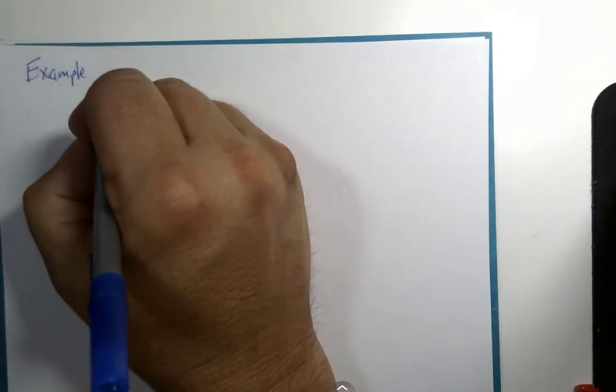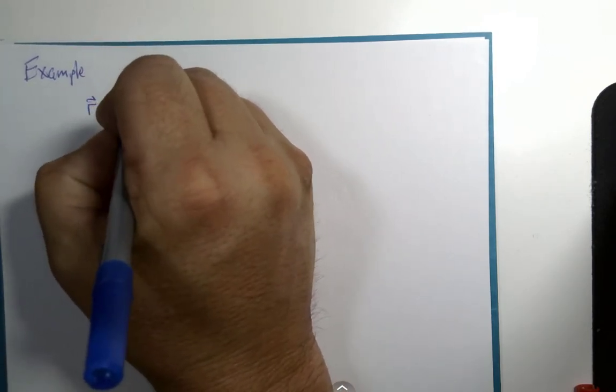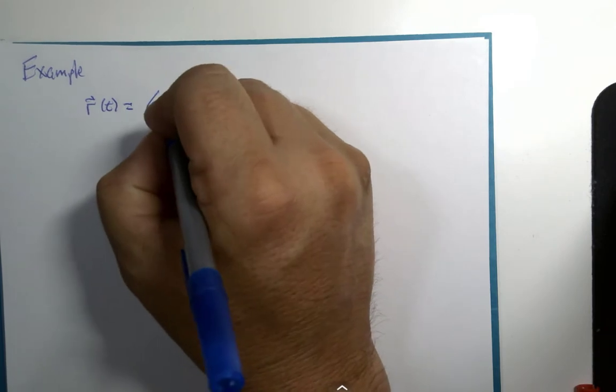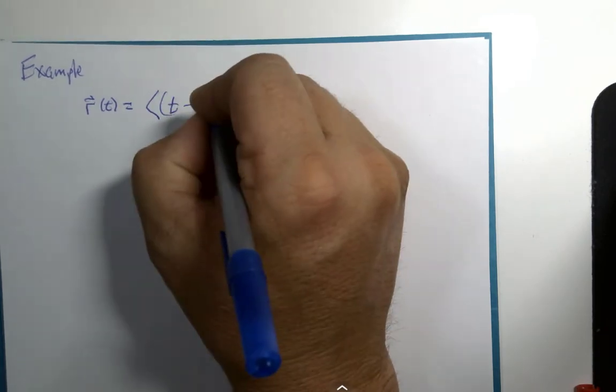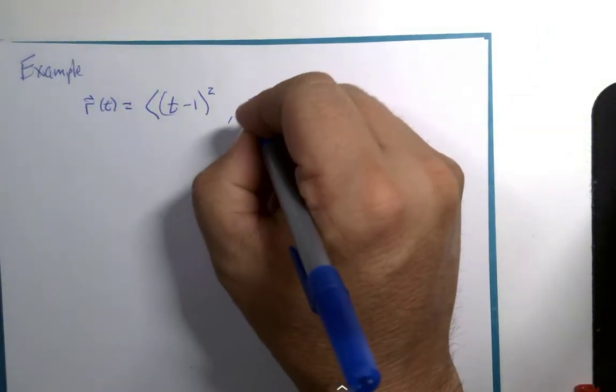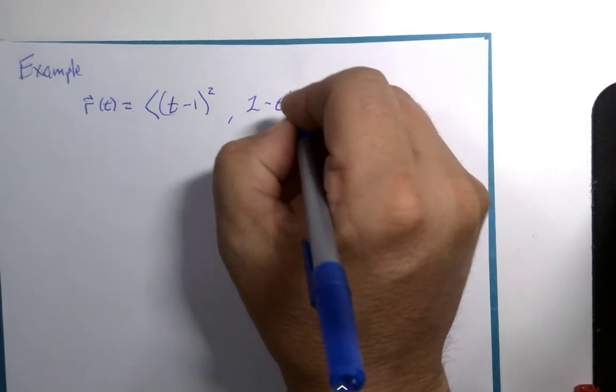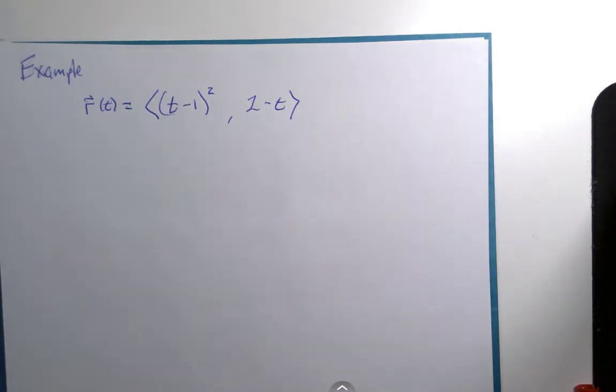r(t) = <(t-1)^2, 2-t>. And we are going to look at a graph. We're going to look at a graph of this.